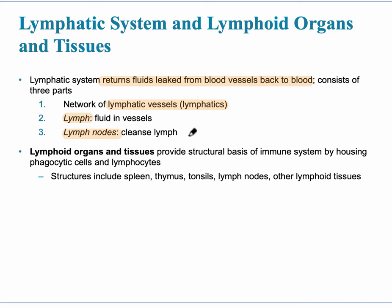These are small organs associated with the vessels. The lymphoid organs and tissues provide a structural basis of the immune system, and they house specific immune cells — mainly phagocytic cells and lymphocytes.